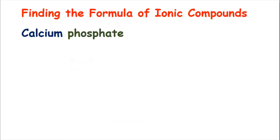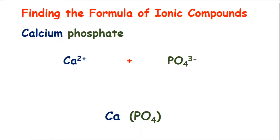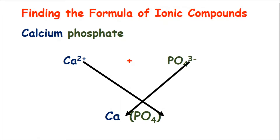Now we're going to look at one more example: calcium phosphate. The calcium ion is Ca2+. We leave a bit of space, put a plus, and leave some space again. The phosphate ion is PO4 3-. We leave space and put Ca, then we put PO4 together in brackets. It's important that if we have a polyatomic ion like PO4 3- we put it in brackets. Now we draw the arrows: one from the 2+ down next to the brackets of the PO4, and one from the 3- down to the Ca.